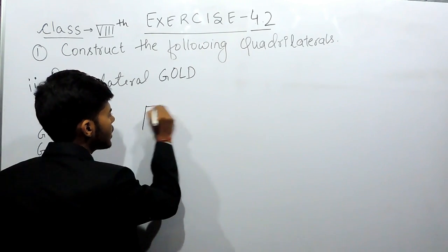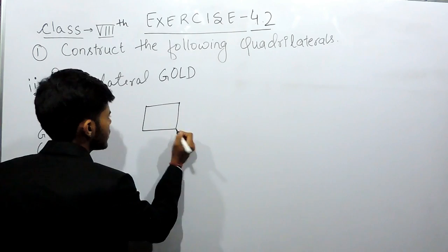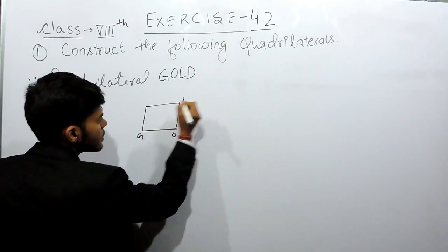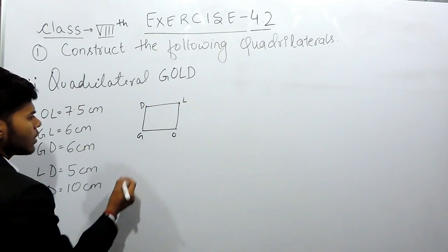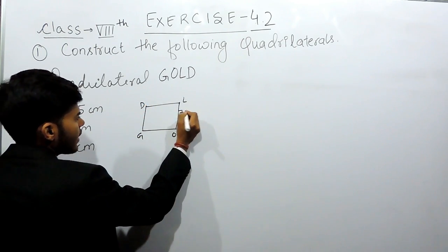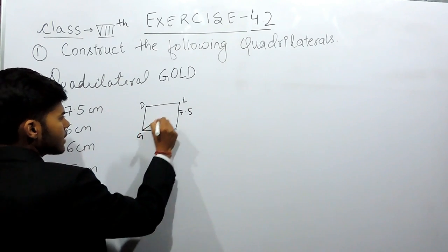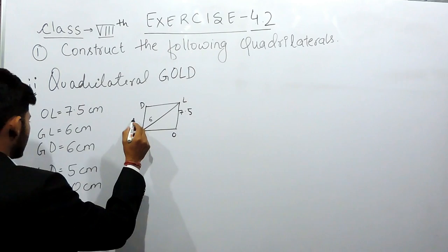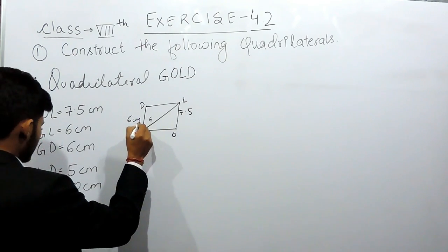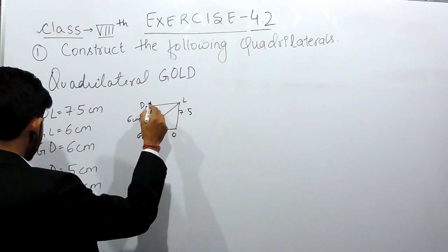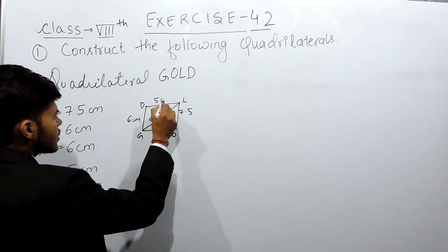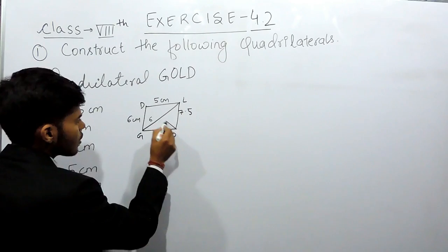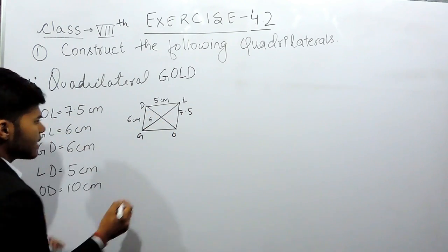First of all, we will draw the rough figure. We will name this GOLD. We are given that OL is 7.5 cm, GL (this diagonal) is 6 cm, GD is 6 cm, LD is 5 cm, and OD is 10 cm.